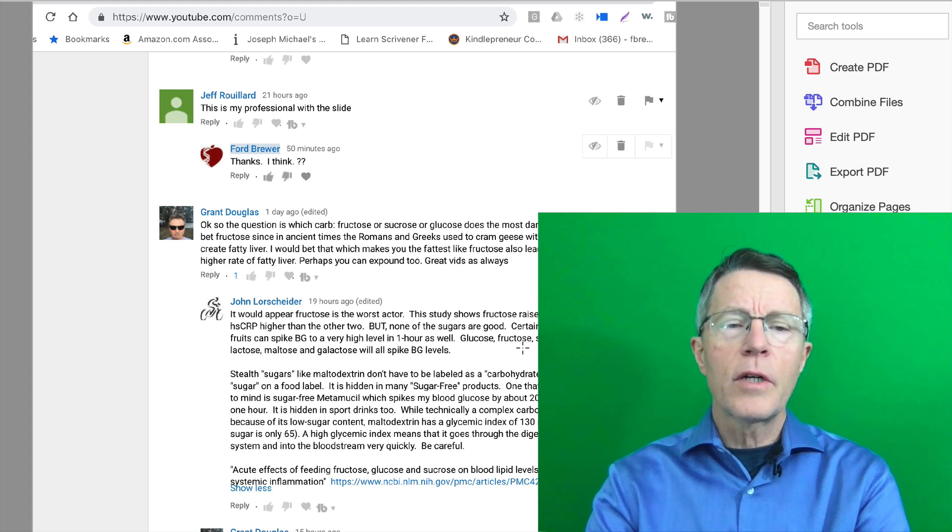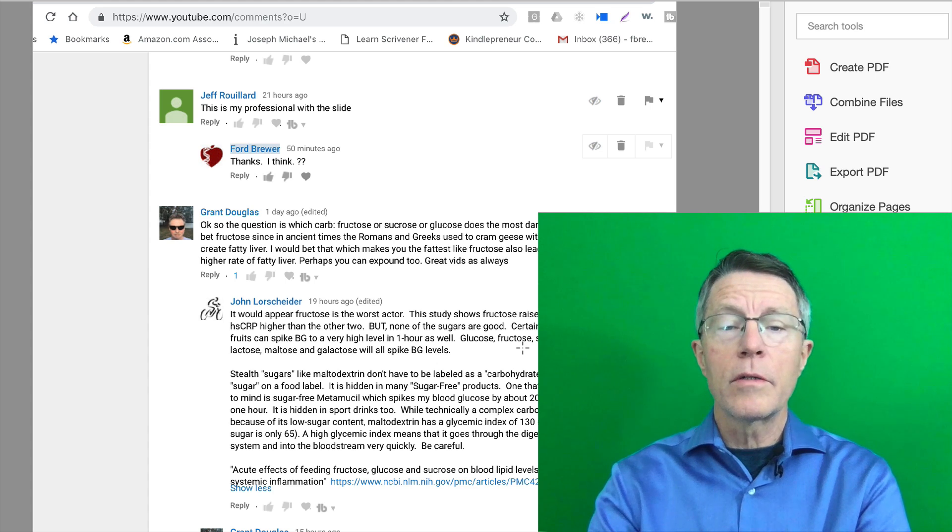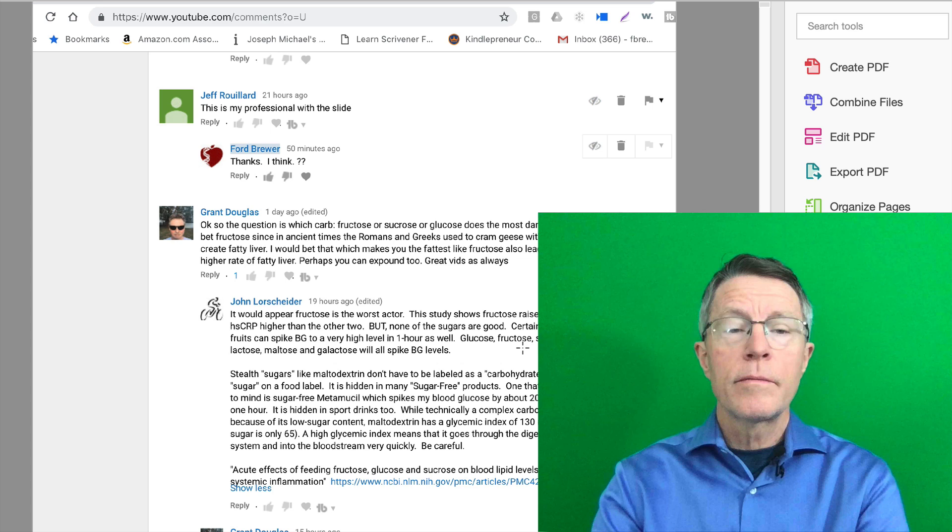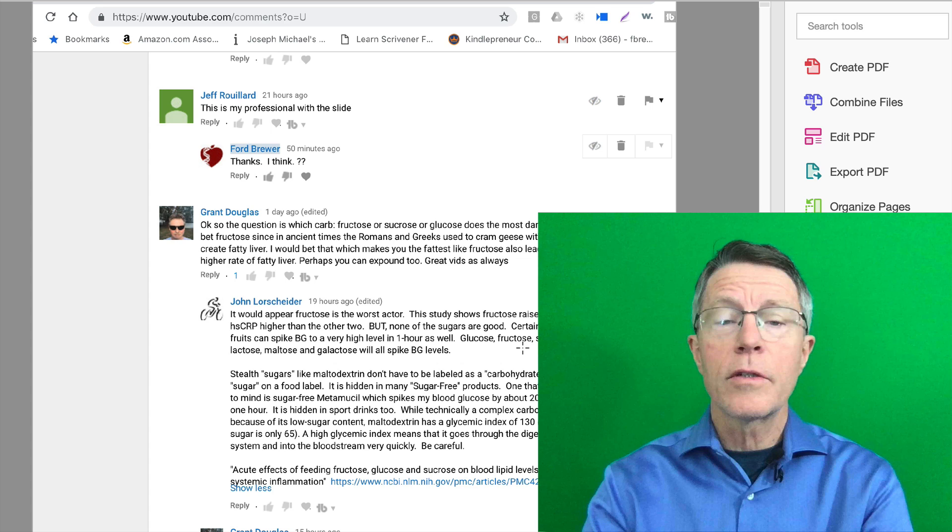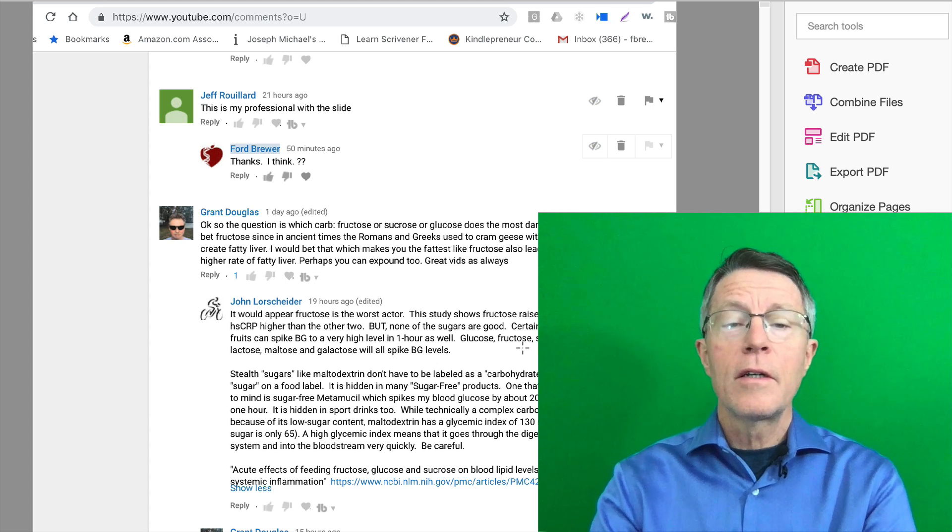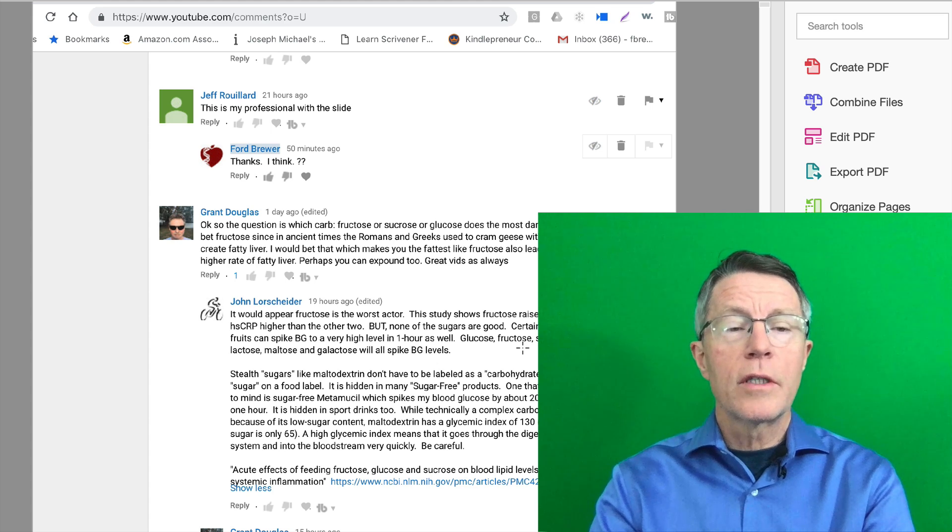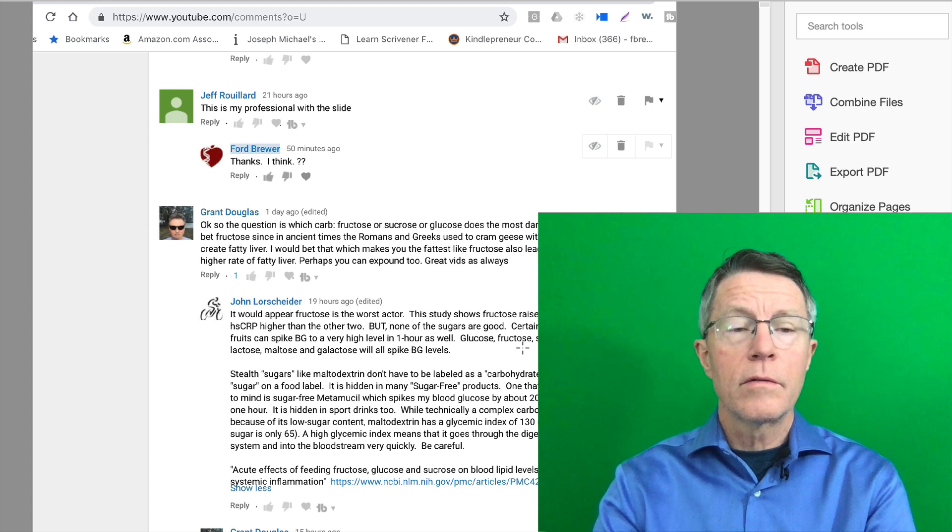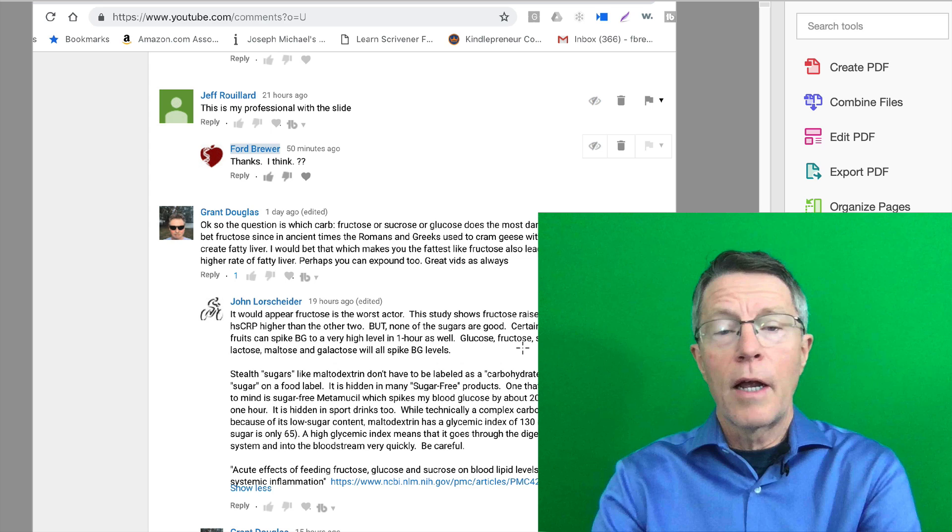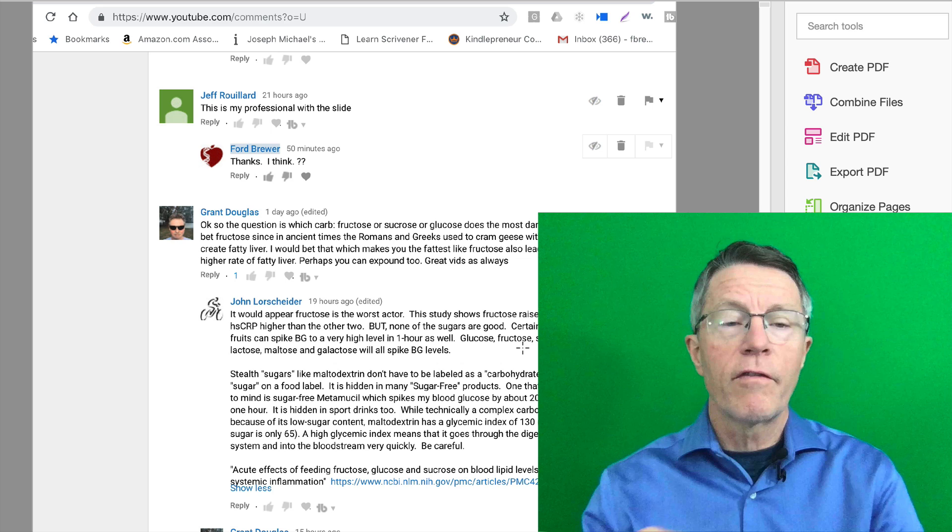Grant says, okay, so the question is which carb, fructose or sucrose or glucose, does the most damage? I bet fructose since in ancient times the Romans and Greeks used to cram geese with figs to create fatty liver. Well, he didn't mention that the French and a lot of other folks currently stuff geese with corn, high fructose corn, to do the same thing, to create that fatty liver.